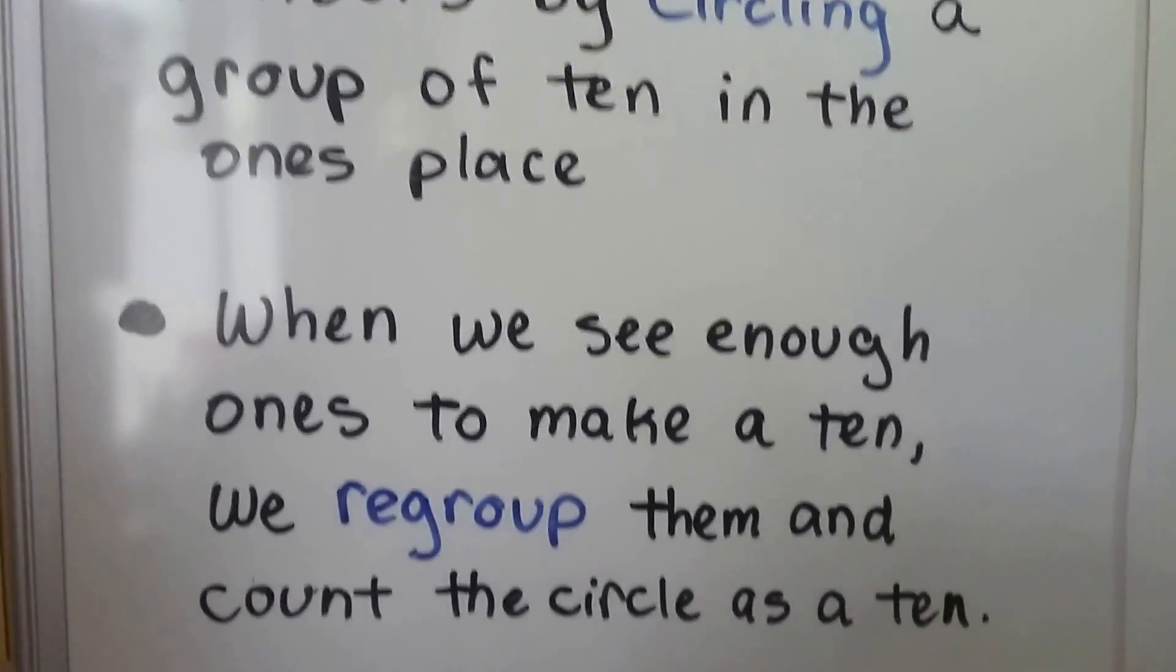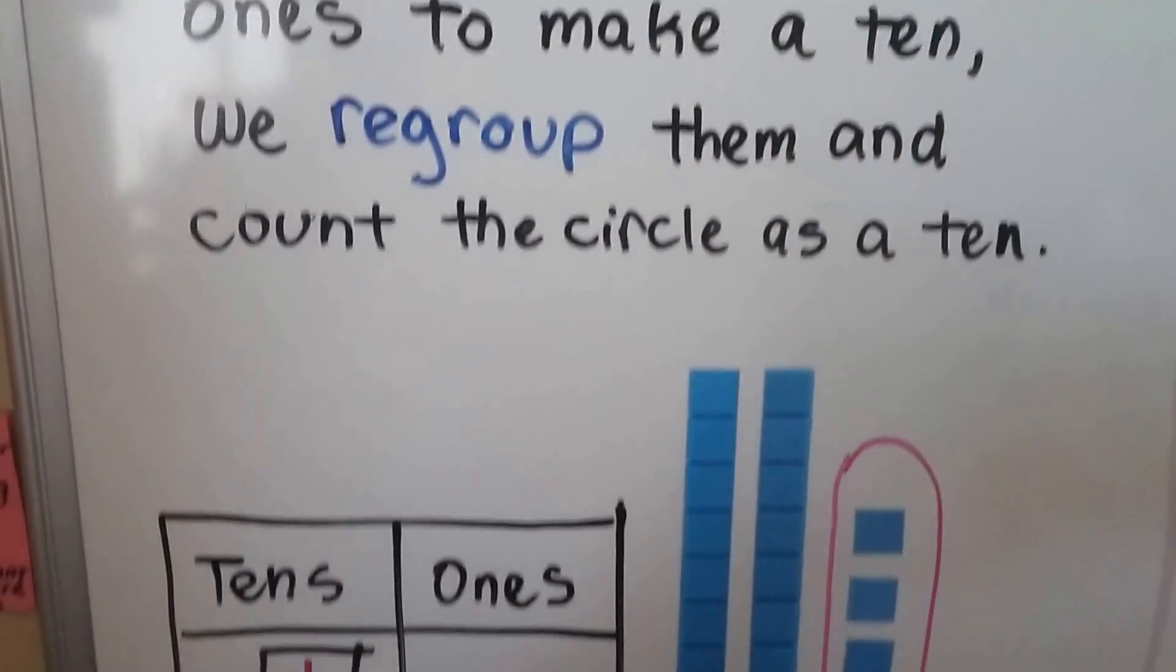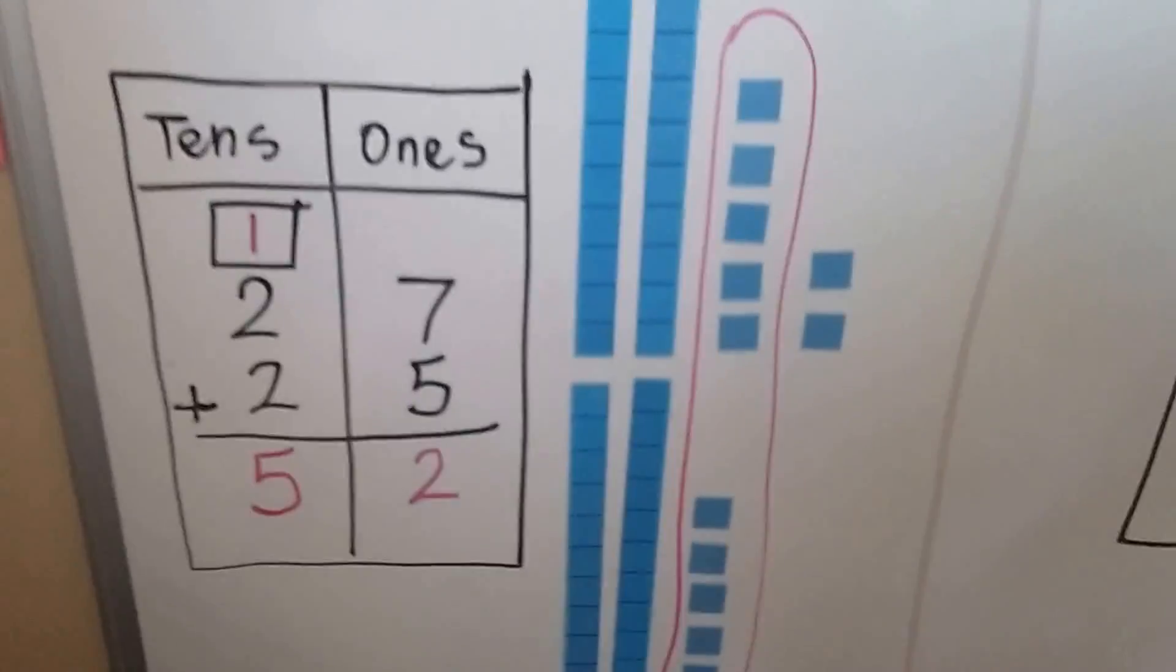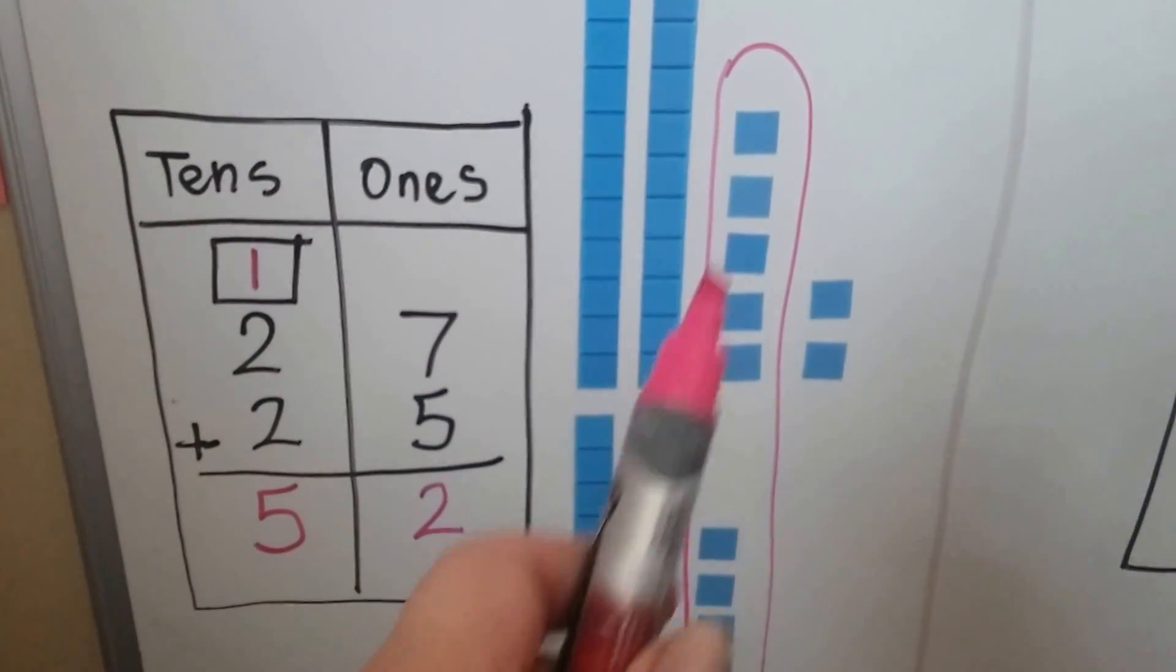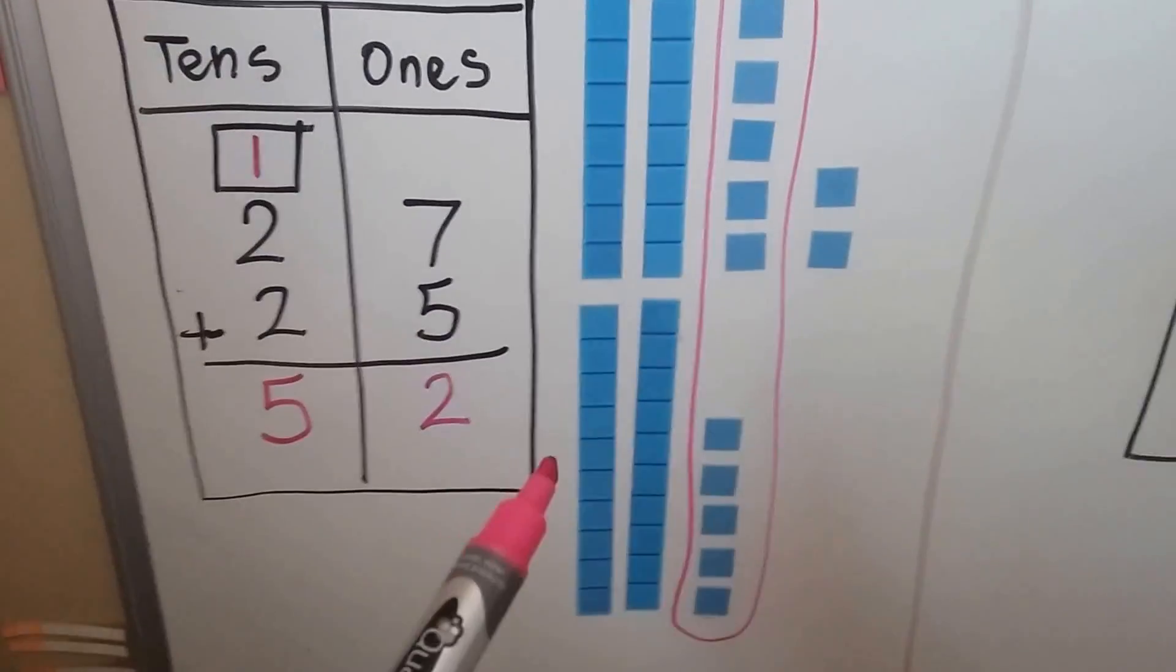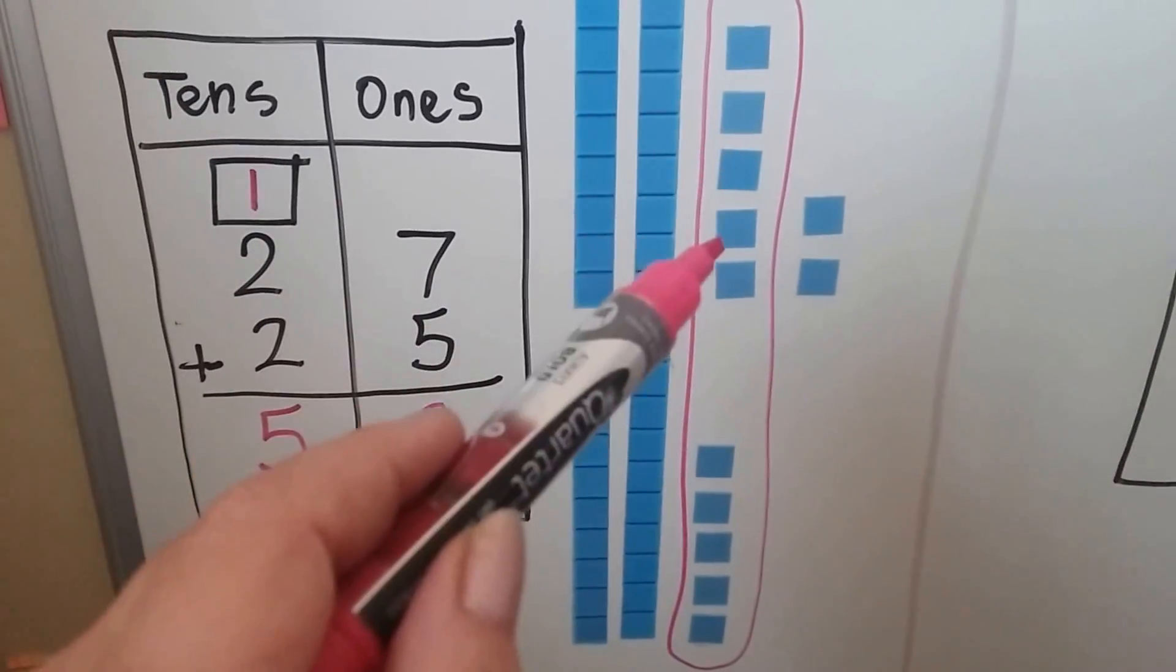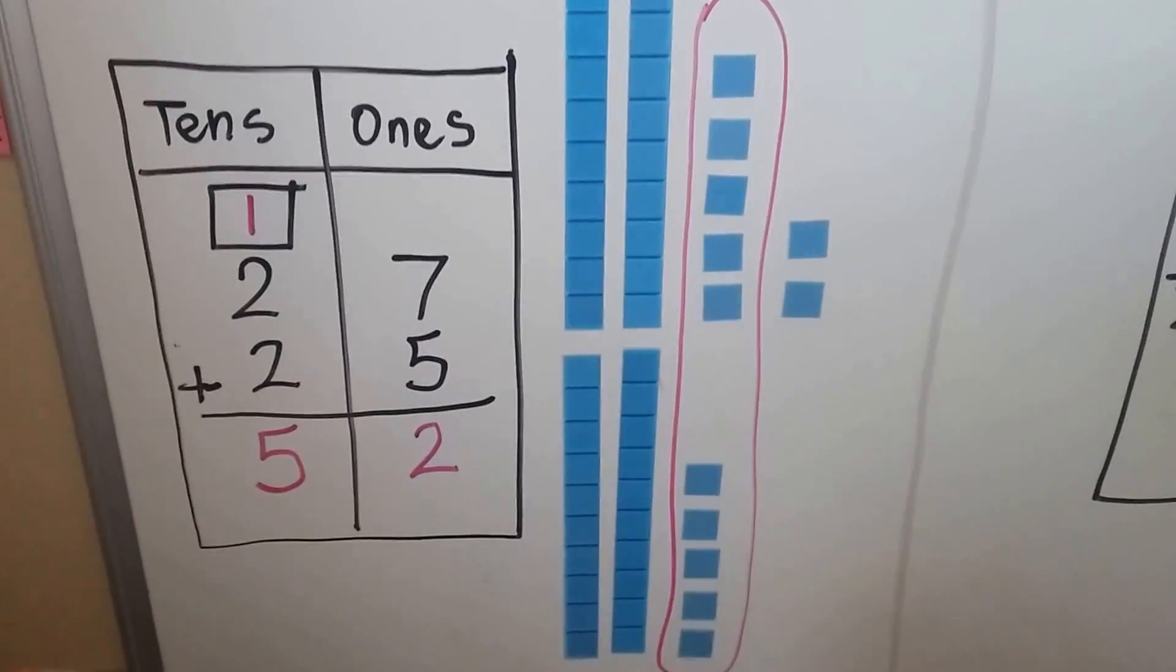When we see enough ones to make a 10, we regroup them and count the circle as a 10. If we want to add 27 plus 25, we see we have two 10s and seven ones for the 27. We have two 10s and five ones for the 25. We can group this 5 and this 5 together because 5 plus 5 makes 10. We can circle it as another 10.